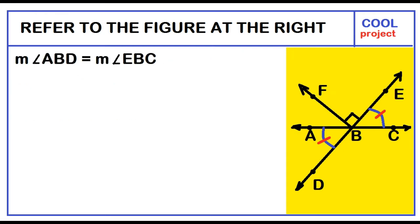The figure shows that the measure of angle ABD equals the measure of angle EBC. The measure of angle ABD equals 7x minus 13, and the measure of angle EBC equals 4x plus 14.